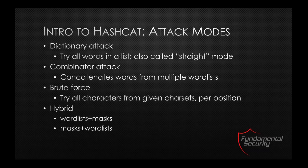The first one is the dictionary attack, where it goes straight through a dictionary word by word, calculates the password hash for each, and compares against the hash you're trying to crack. In combinator mode, it concatenates words from multiple word lists — take word list one and word list two, combine the first word from list one with all the words from list two, then move to word two from list one and combine with all words from list two. It goes word by word, combining left and right word lists based on where they appear on the command line.